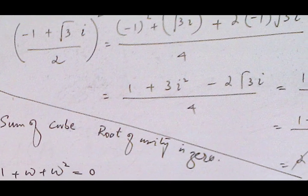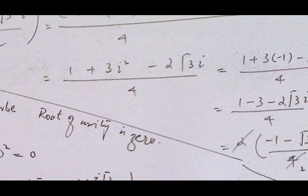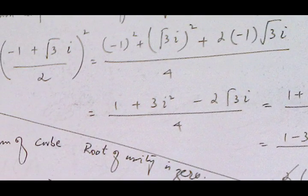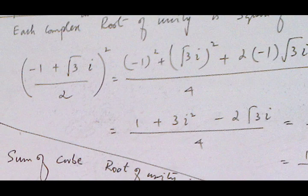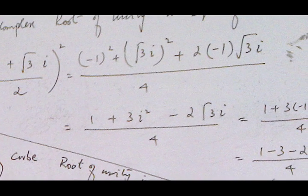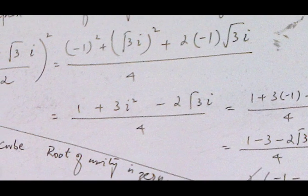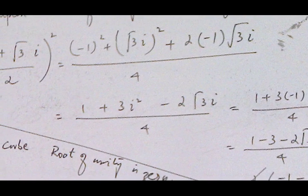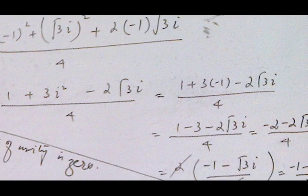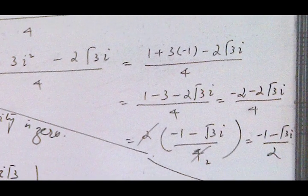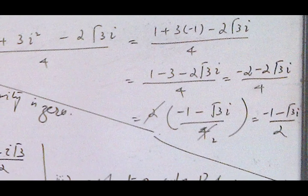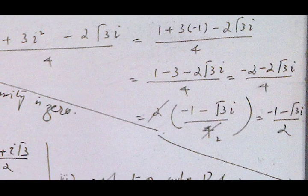If we square one complex root it gives the other. We simplify by expanding (-1 + √3·i)² using a² + b² + 2ab over 2² = 4, and since i² = -1, simplifying this value gives us the second complex root.